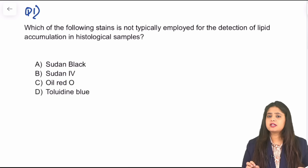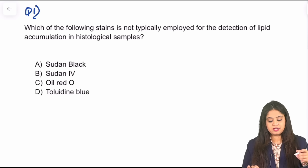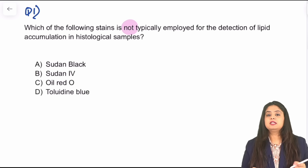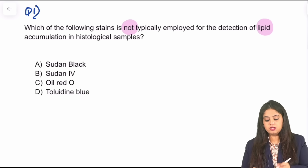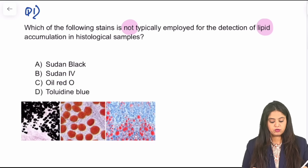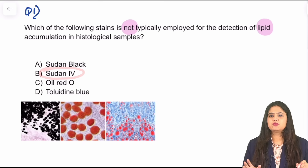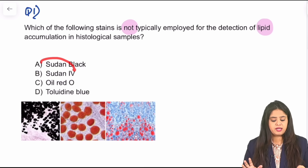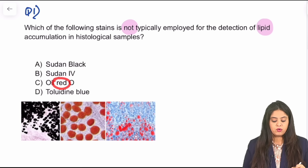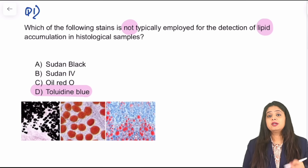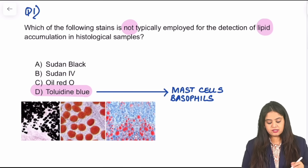The first question is a very recent INICET question — simple yet important: which of these is NOT typically employed for the detection of lipid accumulation? For lipid, we have the classical Sudan black, which gives a black color. We also have Sudan 4, which gives an orangish color — so anything from the Sudan family is for lipid. And then there's Oil Red O, which gives a red color. The one which is NOT employed is Toluidene blue.